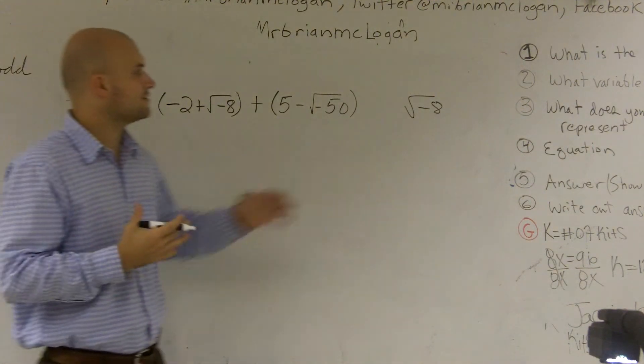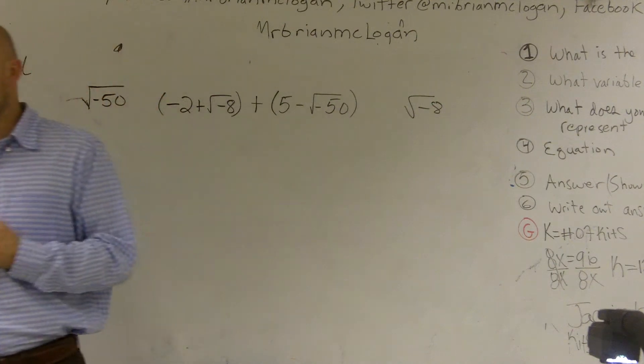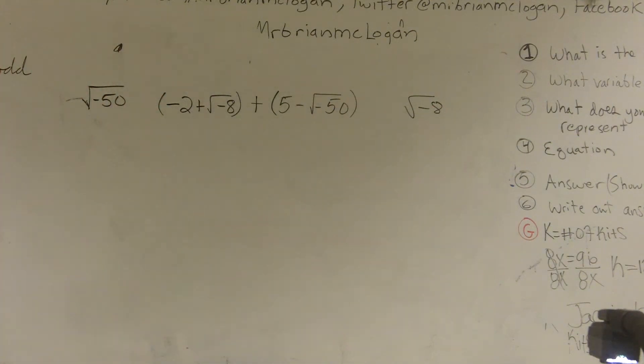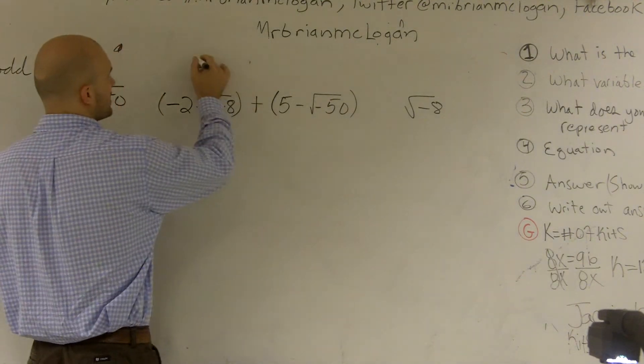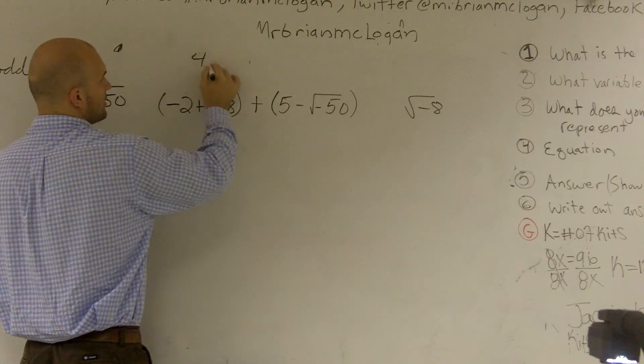When I want to simplify my radical, remember what you want to do is you want to look inside what the radical is. We want to see what can we take the square root of. You can take your square root of what we call square numbers, which would be 4.